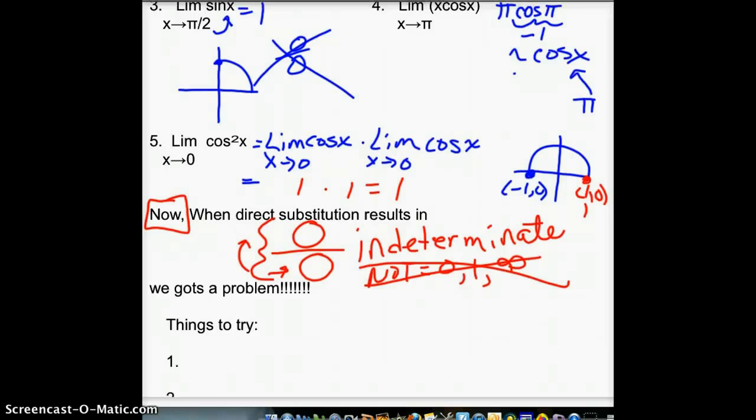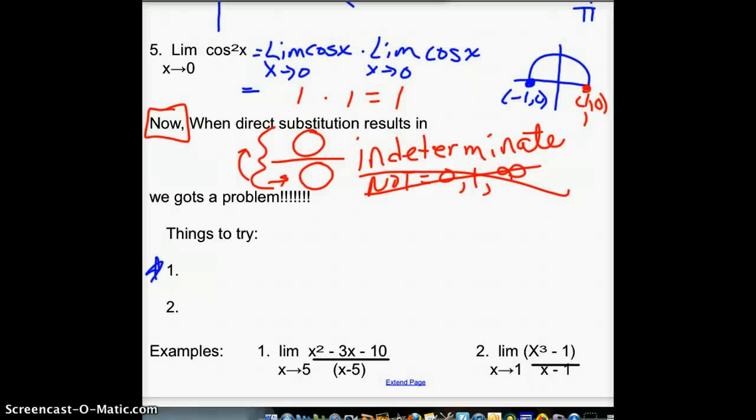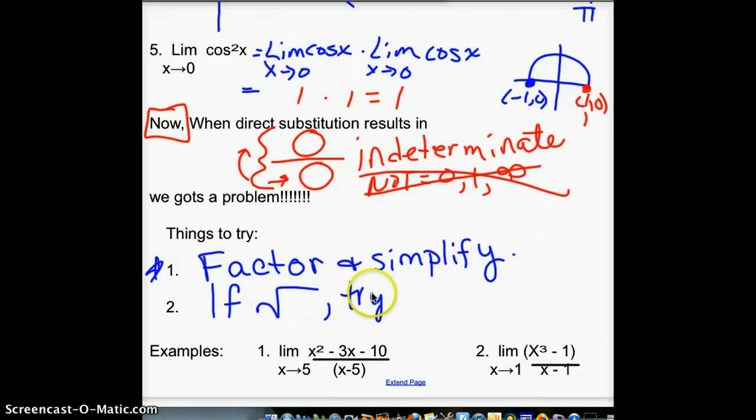So we have a problem when that happens down here. So there's some good things that you can try. And the first thing to do when you get an indeterminate form. It doesn't mean we can't figure out the limit. It just means direct substitution's going to fail. So a good thing to try is to factor and simplify. And if they factor and you get things to simplify, you might be able to work it on out. The other one is if there's a square root involved, we're going to try multiplying the top and bottom by the conjugate. And we'll talk about conjugates here in a second in case you forgot what they are.